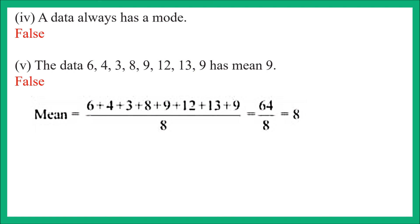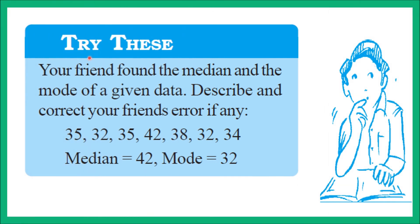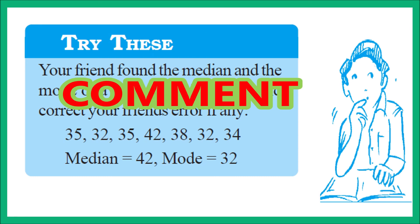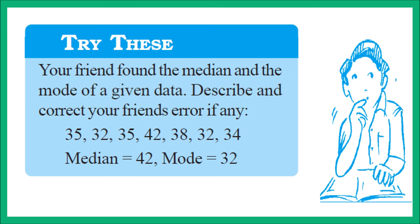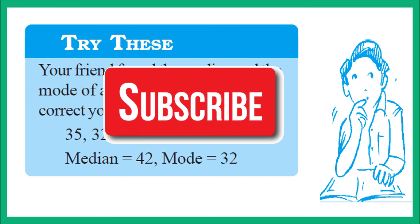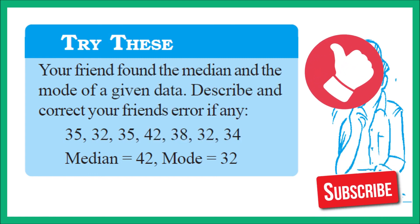I hope this video helped you clear all doubts related to mean, median, and mode, and all your concepts are now clear. Now it is time for your test — Try These: Your friend found the median and mode of a given data. The friend calculated median as 42 and mode as 32. Calculate it yourself and tell whether your friend is correct or not. If you watched this full video and learned from it, do comment. Like and share the video. See you in the next video with a new exercise — keep learning!